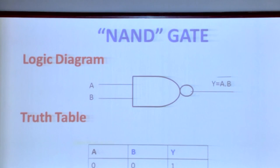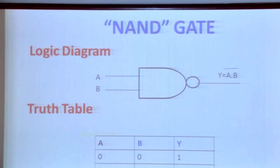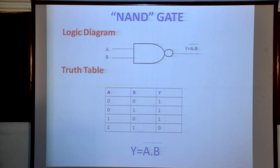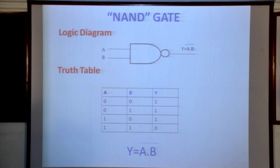The next gates are the universal gates. The NAND gate and NOR gate are called universal gates. The expression of the NAND gate is (A and B) bar, or (A·B)'. The NAND gate is a combination of NOT and AND. See the truth table: when A=0 and B=0, A·B is 0 and the complement is 1. When A=0 and B=1, A·B is 0 and the complement is 1. When A=1 and B=0, the complement is 1. When both inputs are 1, the output is low.